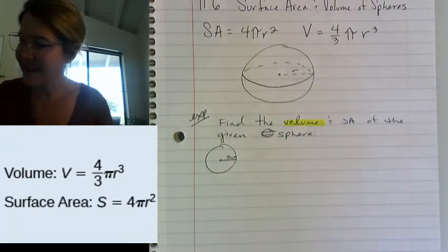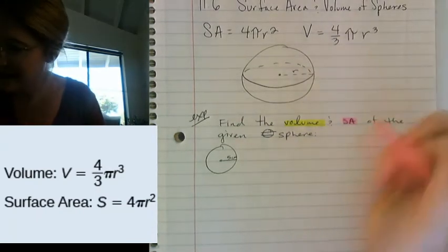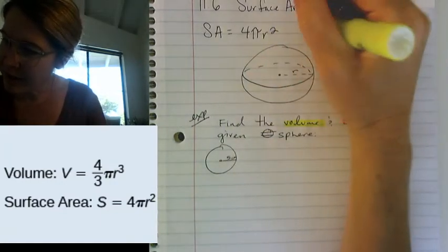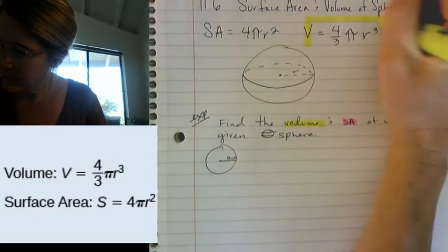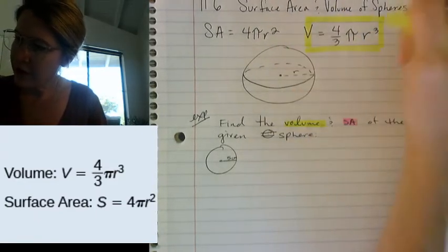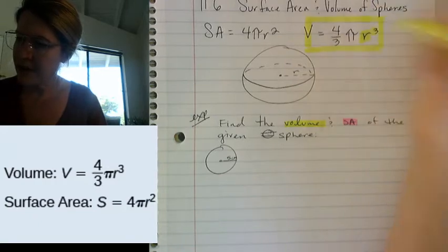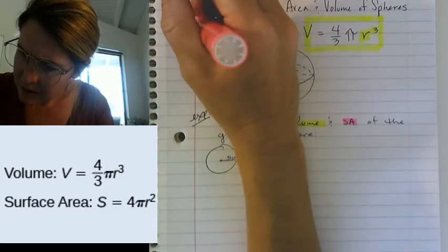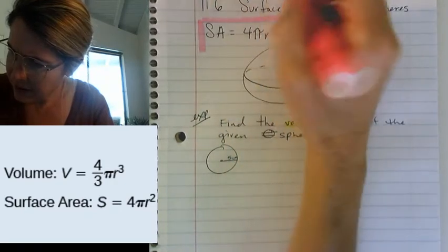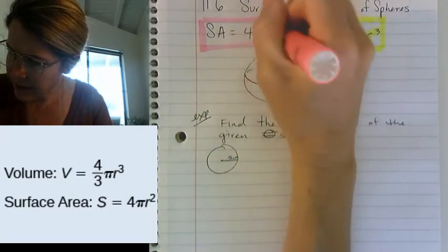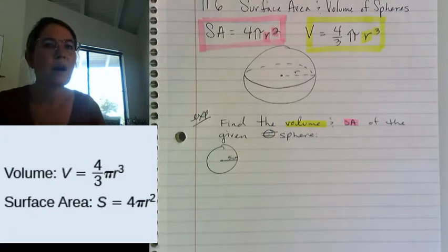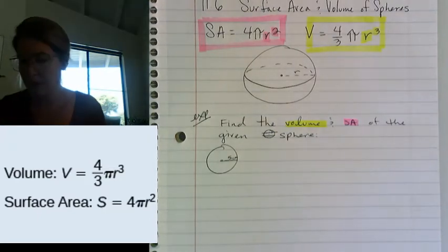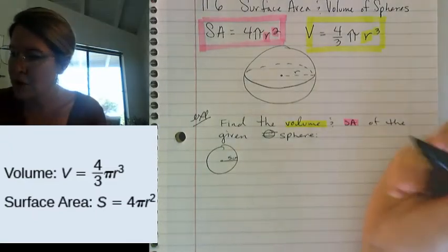Did you guys miss my highlighting? I bet you did. I miss highlighting. It's so fun. Alright, here's my volume formula. Volume, we are cubing our radius, which makes sense. Surface area, our units are getting squared. So our solutions for surface area are going to be units squared.